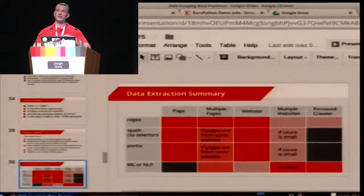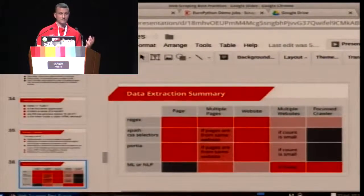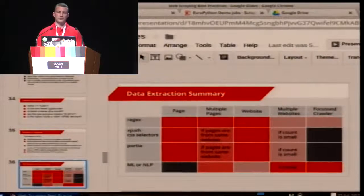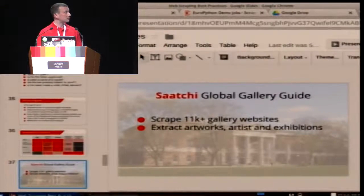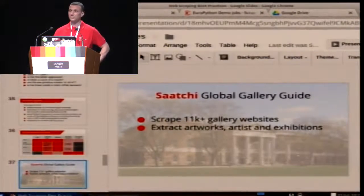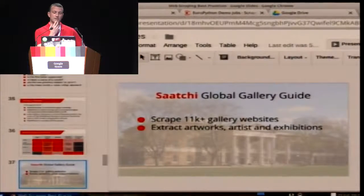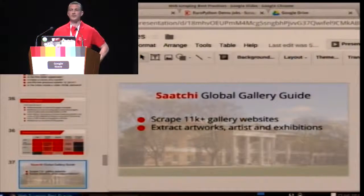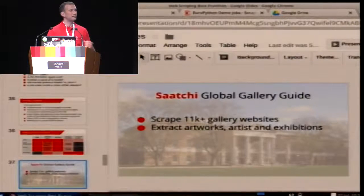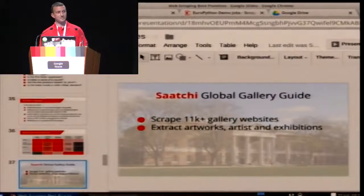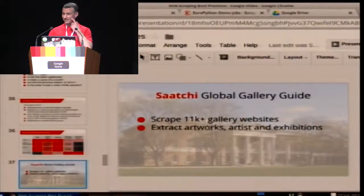To summarize: we use different technologies depending on the scale of extraction. HTML parsing and Portia are very good for a single page, single website, or multiple websites if there aren't too many. Machine learning approaches are very good when we have a lot of data — we compromise a bit on accuracy but that's the nature of it. As an example project, the Saatchi Art Gallery — a gallery of contemporary art in London — we did a project with them to create content for their global gallery guide showcasing artworks, artists, and exhibitions from around the world.